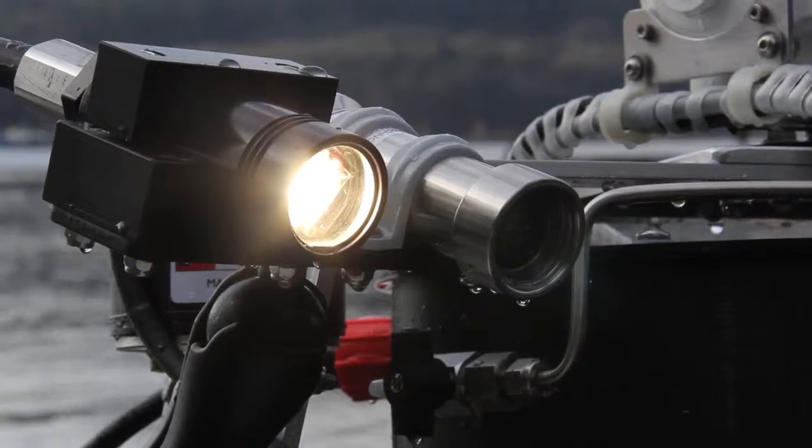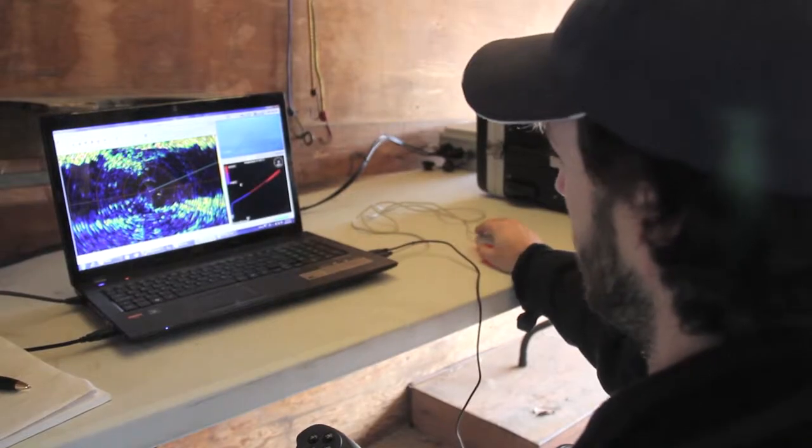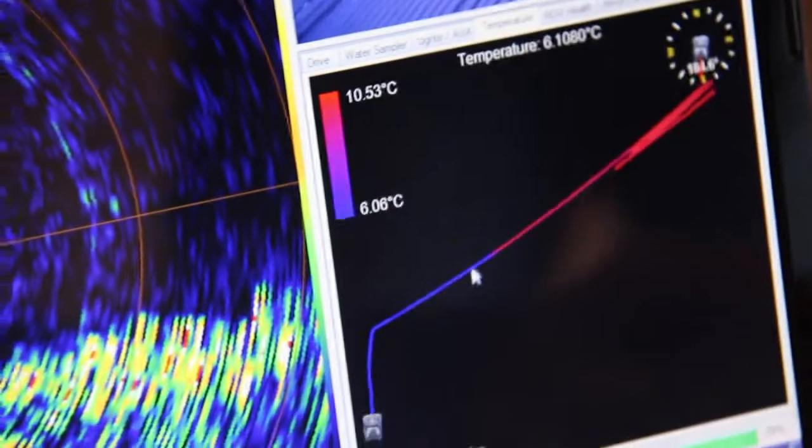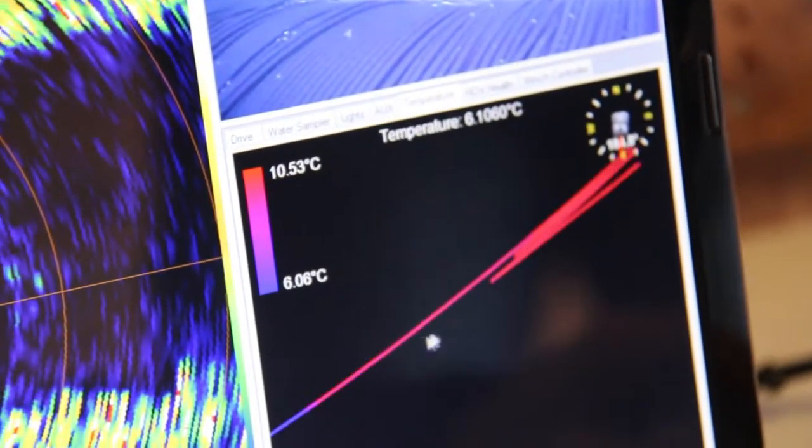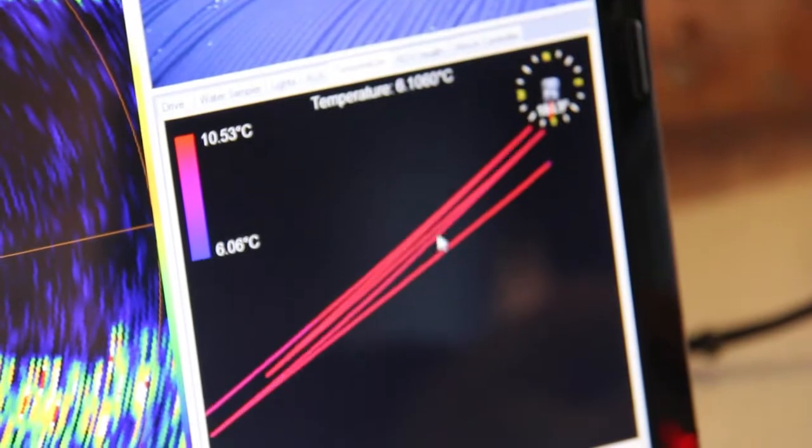We can toggle our lights on and off. We have a temperature map which shows the temperature over the distance we've driven. And right here is where we entered the water and it dipped down to about six degrees.